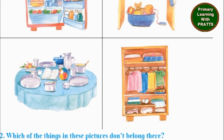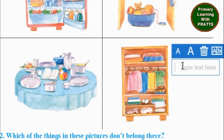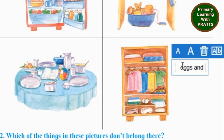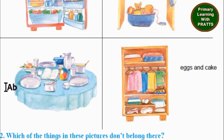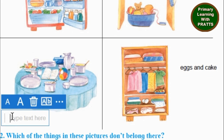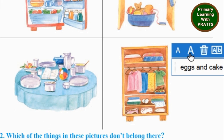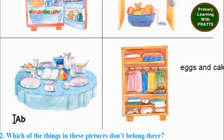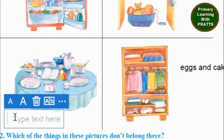Let's write them over here. In the wardrobe, you will put eggs and cake. You will need to mark it in your textbooks. In the dining table, what is out of place? A ball and a book.